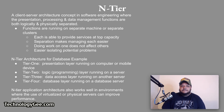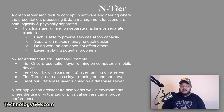Finally, we have n-tier architecture, a client-server architecture concept in software engineering where the presentation, processing, and data management functions are both logically and physically separated. These functions each run on separate machines or separate clusters so that each is able to provide services at top capacity since there is no resource sharing. This separation makes managing each layer easier and also makes it easier to isolate any potential problems. N-tier architecture uses more than three layers and is frequently used for database applications. For example, an n-tier architecture for a database app might have: tier one — the presentation layer on a computer or mobile device; tier two — the logic or programming layer on a server; tier three — the data access layer on another server; and tier four — the database layer on a database server.